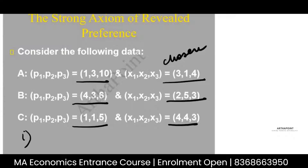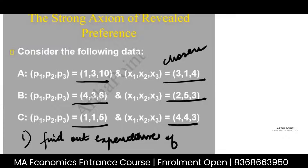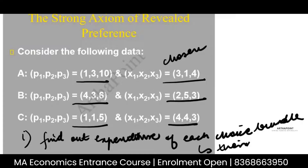The first thing I want you to do is find out the expenditure of each chosen bundle at their own prices. Let's try this. Pause the video and try this for yourself. If possible, make that entire matrix.